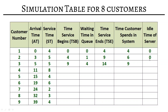Customer 4 arrives at arrival time eleven, but the system is busy until fourteen, so service begins at fourteen. Waiting time is fourteen minus eleven equals three minutes. Service ends at fourteen plus eight equals twenty-two. The customer spent eight minutes of service plus three minutes waiting, totaling eleven minutes. Server idle time is zero — the system was continuously working.